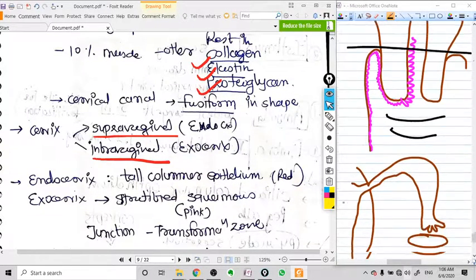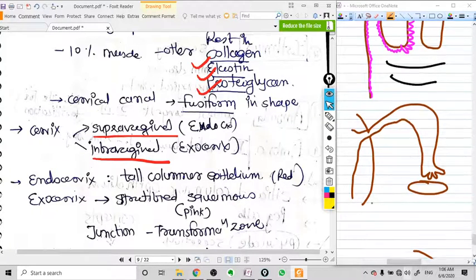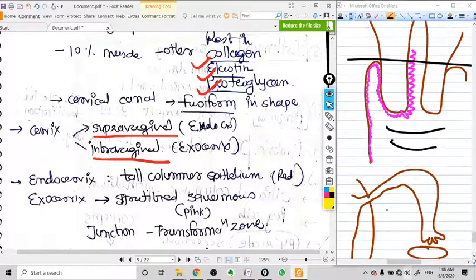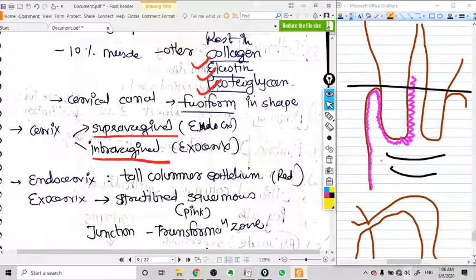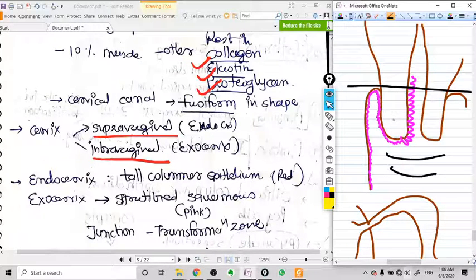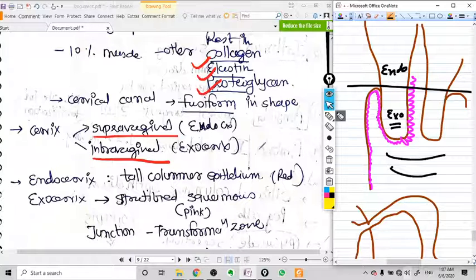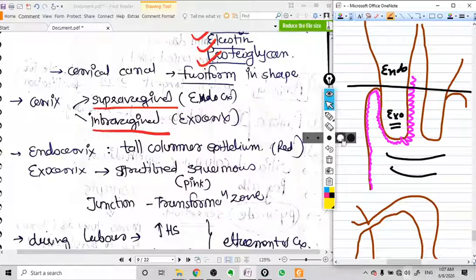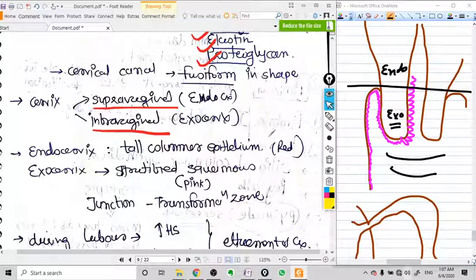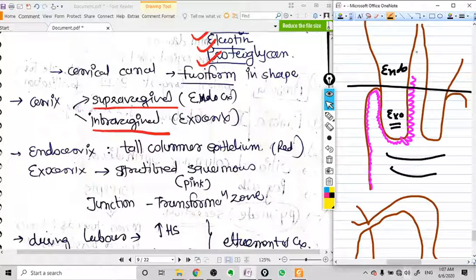We have a very important histological learning here. You can see the vagina, this is the exocervix, meaning the infravaginal part, and this is endocervix, meaning supravaginal part. In case of endocervix, the epithelium is tall columnar epithelium.